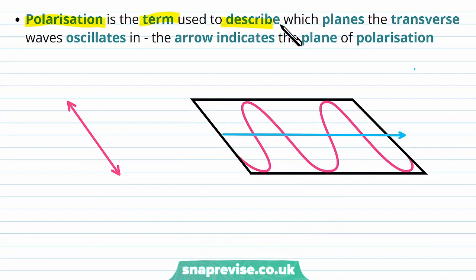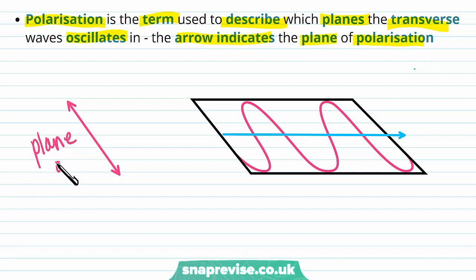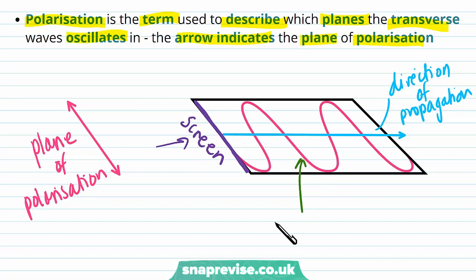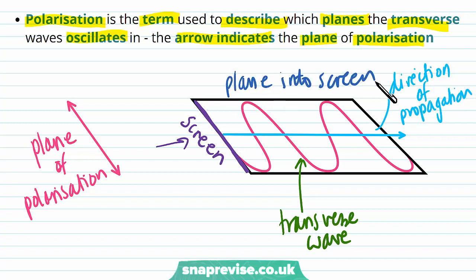Polarization is the term used to describe which plane the transverse wave oscillates in. The arrow indicates the plane of polarization — the pink arrow shows the plane of polarization and the blue arrow shows the direction of propagation, coming out of the screen. The plane of polarization goes into the screen, perpendicular to the direction of propagation. Rather than having all the different orientations, we now only have one, so the wave has been polarized.